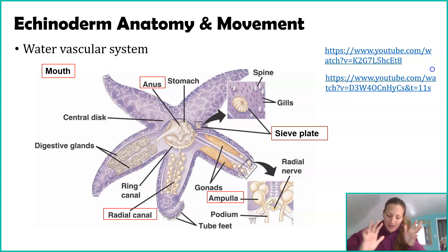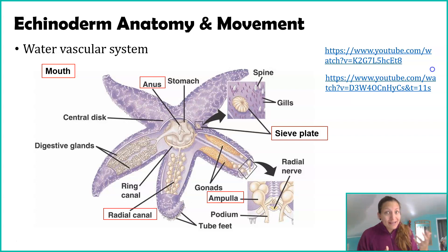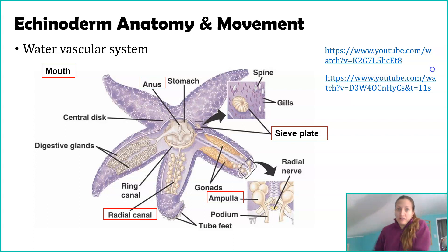A vascular system is typically a series of tubes, canals, and vessels that move stuff. In humans, it moves blood, oxygen, nutrients, and wastes. In echinoderms, they have a similar series of tubes but filled with water — specifically seawater from their environment. And they use that to move, which is remarkable.